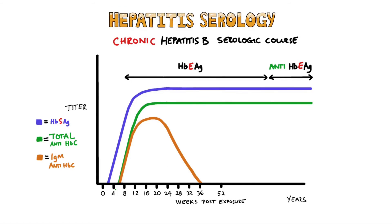This graph shows the progression of chronically infected patients, the main difference being that the hepatitis B surface antigen level remains high and no anti-hepatitis B surface antibodies form. Also note how much longer the hepatitis B E antigen is present.